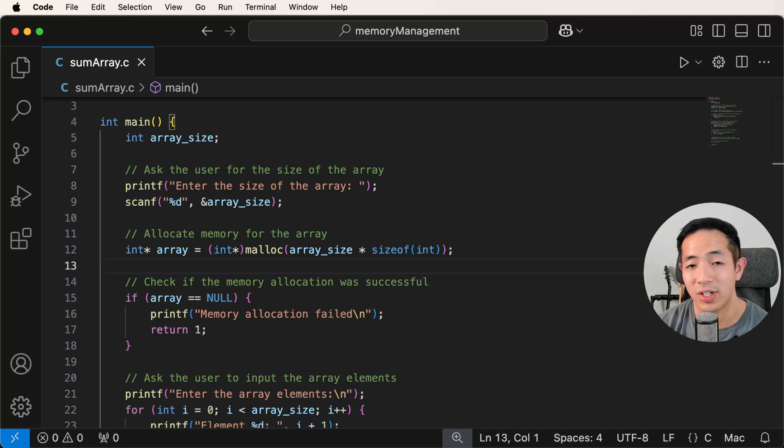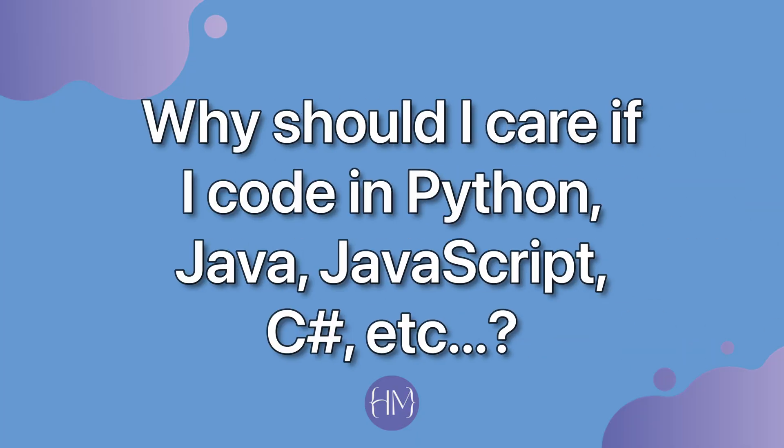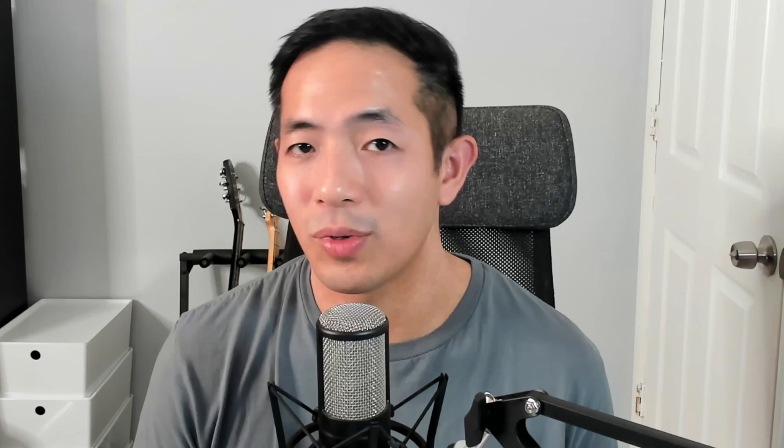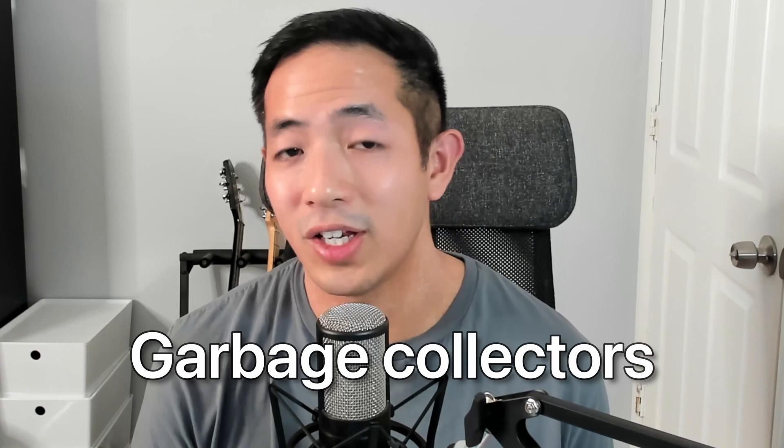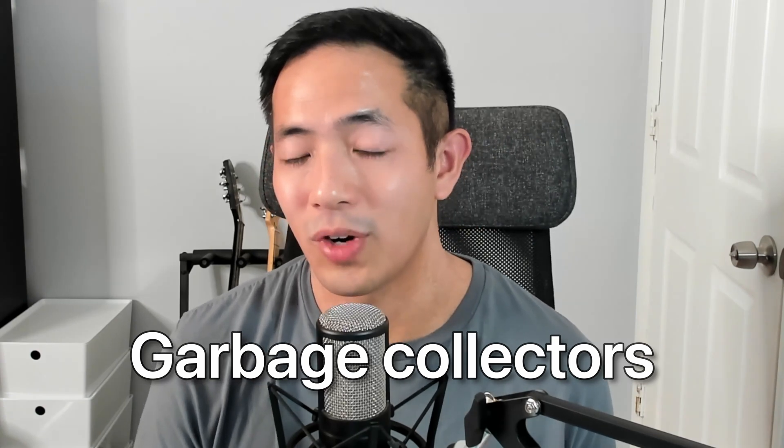What if you don't code in C — what if you use Python, Java, JavaScript, or another higher-level language? The nice thing about those languages is that they take care of memory management for you, handling both static and dynamic allocation and using garbage collectors to clean up memory. However, you still need to care about memory management because references to variables are still a thing, and there are ways you can deal with references such that garbage collectors cannot free memory correctly.